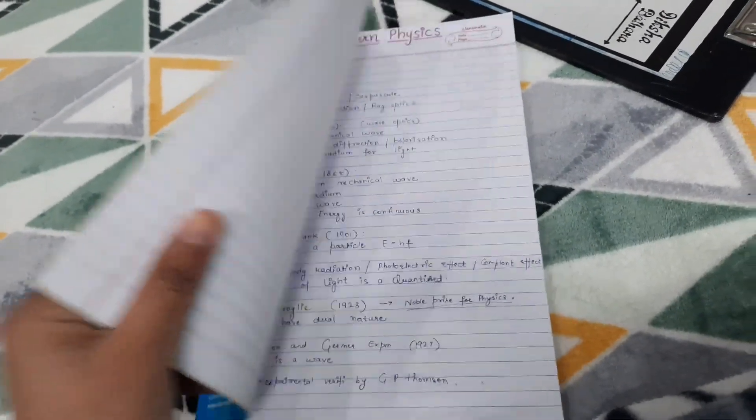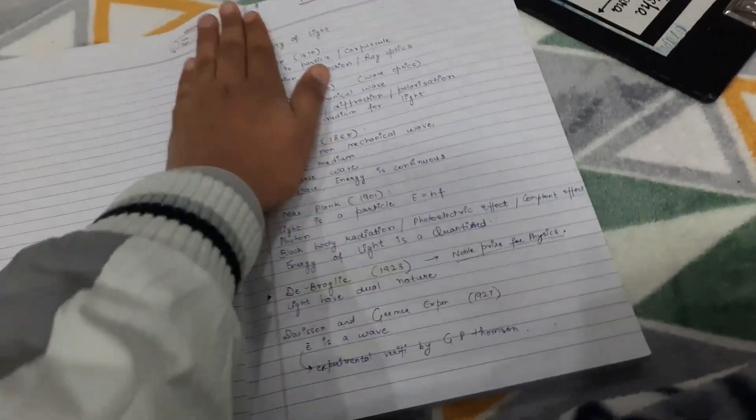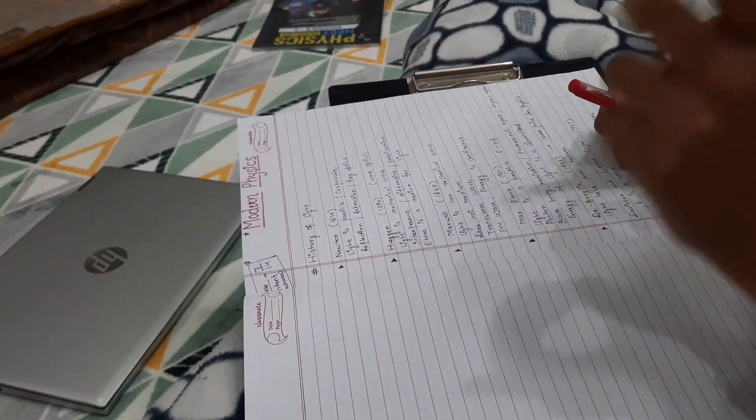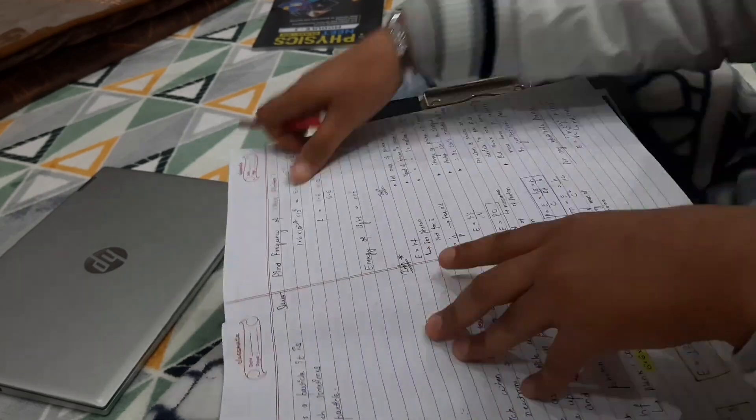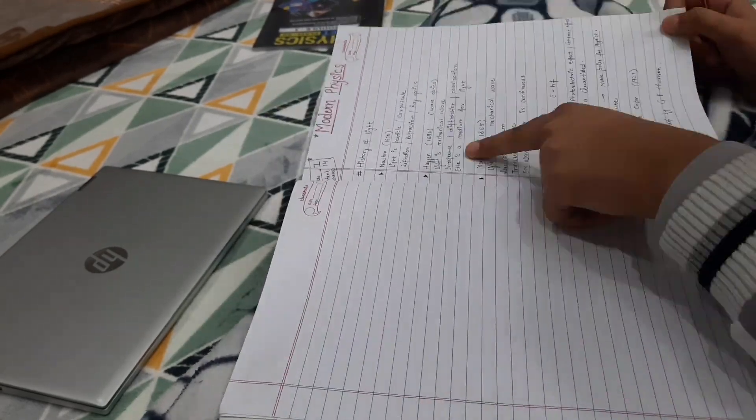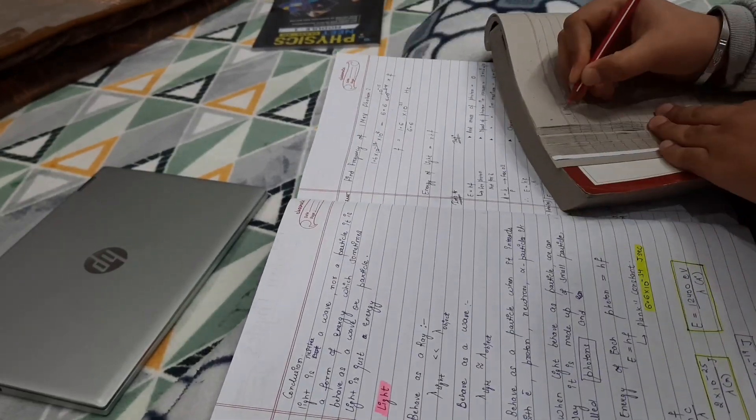Now it's six. I took a long break, like 15-20 minute break. Now I'm doing dual nature chapter of physics. It's a short chapter so I think it will take like 20 or 25 minutes and then I will solve some questions till the time dinner is ready.